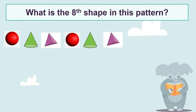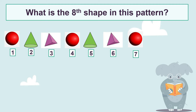Let's see what is the next shape in this pattern: sphere, cone, pyramid, sphere, cone, pyramid. The seventh 3D shape is a sphere, then followed by a cone. So the eighth 3D shape in this pattern is a cone.